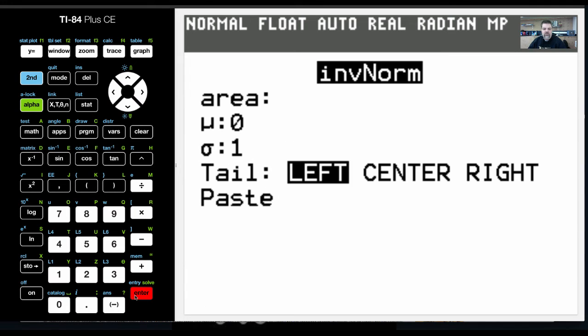What this will do is I can calculate the area under the curve, which is the percentage. So if I were to put 0.899, I think it was like 996 or something like that, and I leave mu at 0 and the standard deviation at 1, I could do left tail, center, right.